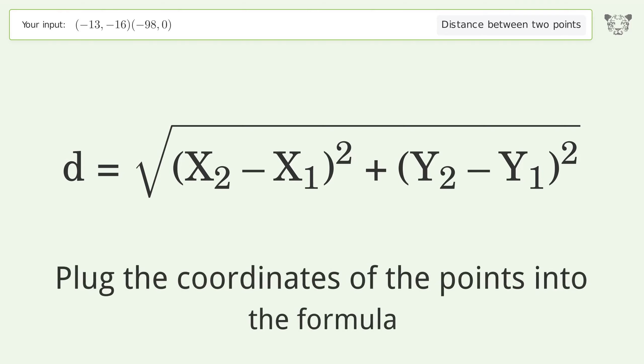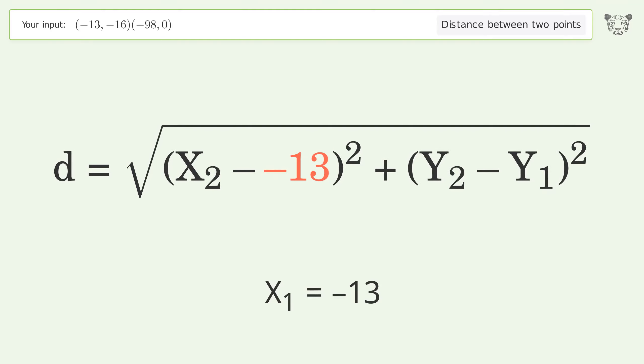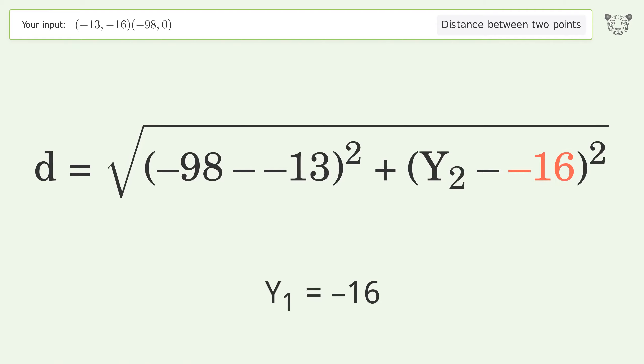Plug the coordinates of the points into the formula: x1 equals negative 13, x2 equals negative 98, y1 equals negative 16, y2 equals 0.